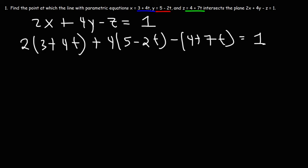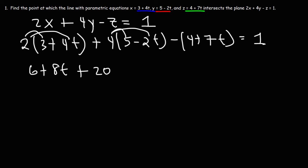Now the next thing we need to do is solve for t, but let's distribute first. So we have 2 times 3, which is 6, and then 2 times 4t, that's 8t. 4 times 5 is 20. 4 times negative 2t, that's negative 8t. And then we need to distribute the negative sign, so this is going to be minus 4, and then minus 7t, which is equal to 1.